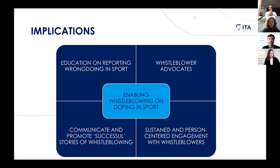Another thing that would help is providing whistleblower advocates — in the US we have ombudsmen for a lot of things with athletes, and an ombudsman essentially guides and advocates for an athlete's rights. That could be someone like Toby, who has actual experience blowing the whistle on doping and now becomes a point of contact and support for athletes considering whistleblowing. We also need to communicate and promote successful stories of whistleblowing — Toby's is a perfect example: he reported, action was taken, and a positive change was made. And then — there's a typo there, my bad — sustained and person-centered engagement with whistleblowers: not just taking their report and saying thank you, but providing long-term continuous support.